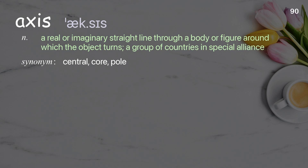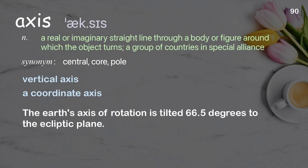Axis: A real or imaginary straight line through a body or figure around which the object turns; also a group of countries in special alliance. Examples: Vertical axis. A coordinate axis. The Earth's axis of rotation is tilted 66.5 degrees to the ecliptic plane.